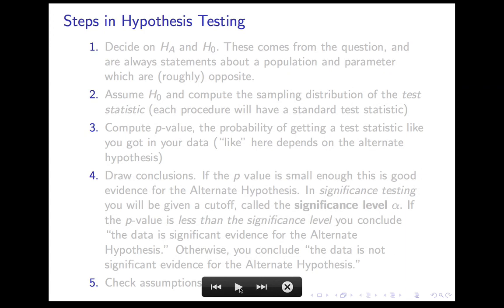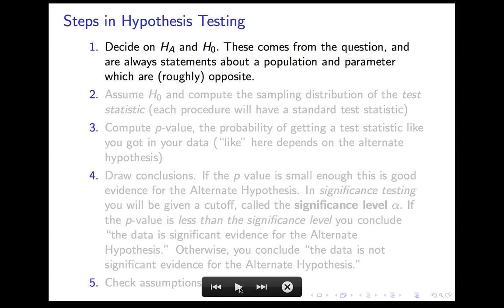We're going to learn a number of hypothesis testing procedures. They all have the same five steps. We'll talk in general about hypothesis testing, then do an example to give you a feel for what a calculation looks like. The first step is to decide on your null and alternate hypothesis. These come from the question, and they are always statements about a parameter in the population — always some statement about mu, or p, or something like that.